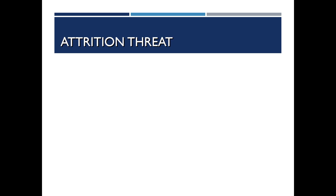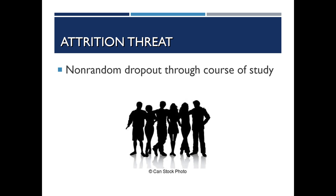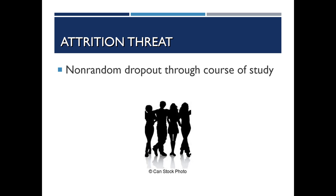The attrition threat, sometimes referred to as mortality, is any kind of non-random dropout over the course of a study. For example, if we have a group of men and women in a study and then many of the men drop out — say two-thirds of the males — that's a non-random pattern. That can affect the results and the internal validity of the design.